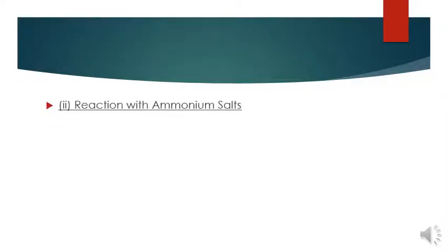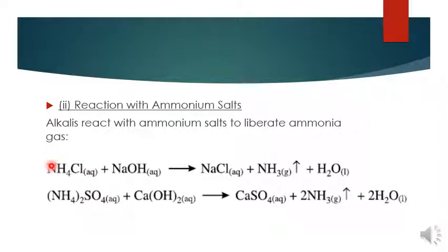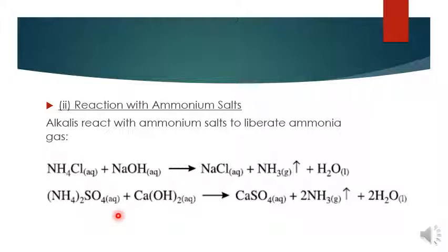Another reaction from base is when base reacts with ammonium salt. Alkali reacts with ammonium salt to release ammonia gas. When base reacts with ammonium salt, you get salt — for example NaCl — and liberation of ammonia gas as a by-product. For example, calcium hydroxide reacts to make calcium sulfate and water as a by-product. Memorize this equation.